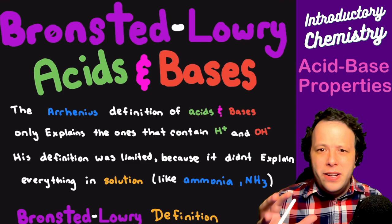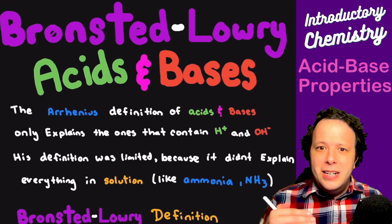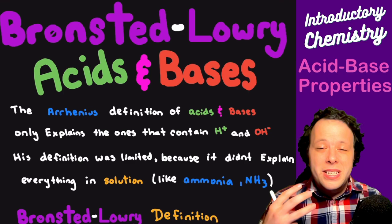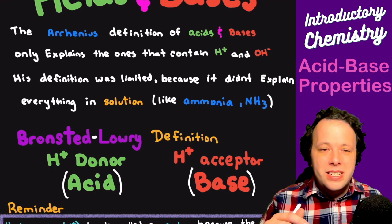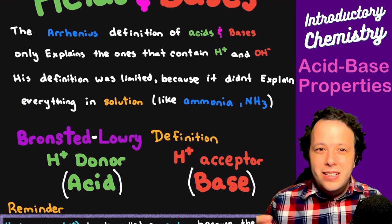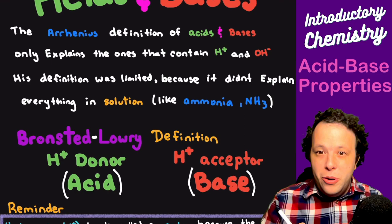Ammonia doesn't donate a proton; however, what it can do is receive one. It doesn't generate H+ or OH- but it can accept one. So instead of the Arrhenius definition, we have the Bronsted-Lowry definition: an acid will donate a proton, and a base will accept or receive that proton. It's all about giving and receiving.